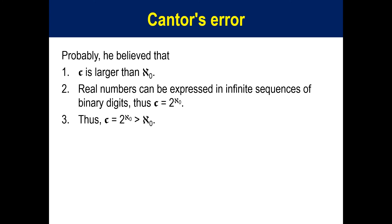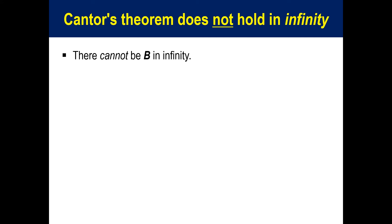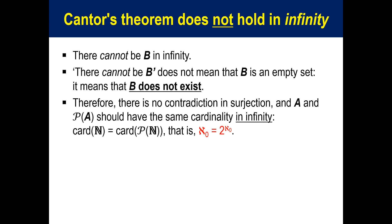Probably he believed that C is larger than ℵ₀. Therefore, I suspect that he was blinded to see the error in his arguments because they fitted so nicely into his belief, even though he was troubled by other people, and he was blinded to see the paradoxes that follow. There cannot be B in infinity — and this does not mean B is an empty set; it means B does not exist. Therefore, there is no contradiction in surjection, and A and P(A) should have the same cardinality in infinity: card N equals card P(N), that is, ℵ₀ equals 2 to the power ℵ₀.